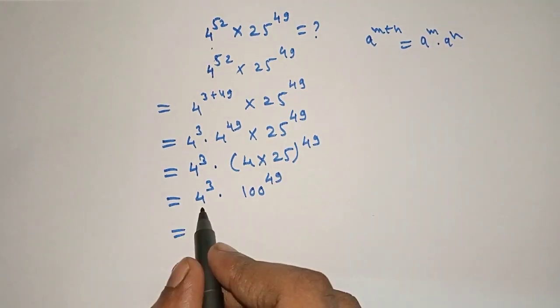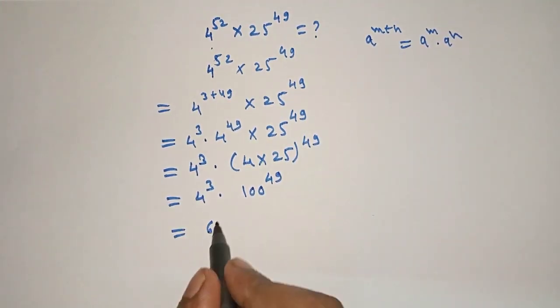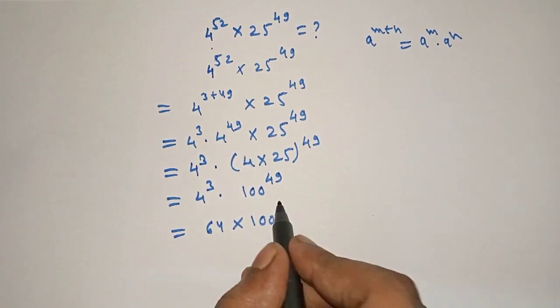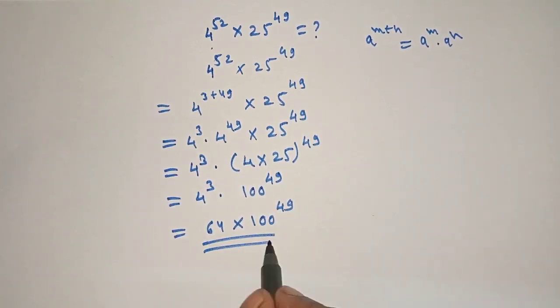Now 4 cube is 64 times 100 raised to 49, which is our right answer.